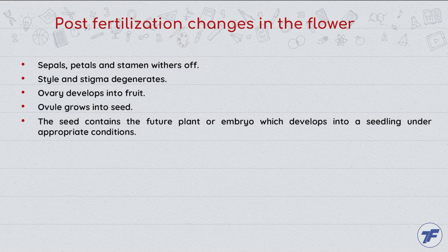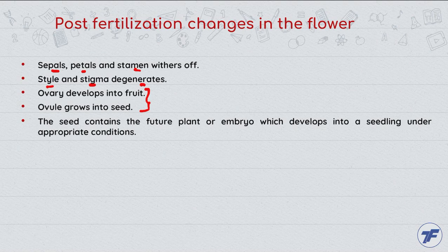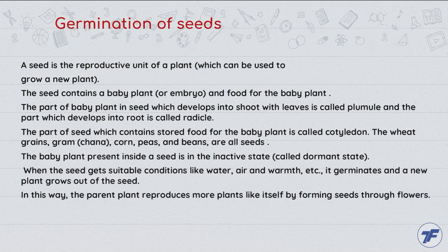Post-fertilization changes in the flower: sepals, petals and stamens wither off — they will go away, they won't remain. Style and stigma degenerate. Ovary develops into fruit and ovule into seed. The seed contains a future plant or embryo which develops into a seedling under appropriate conditions — it will change into a new plant.